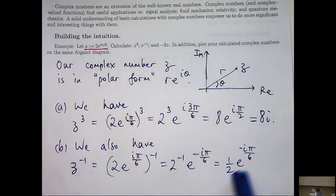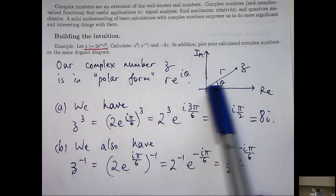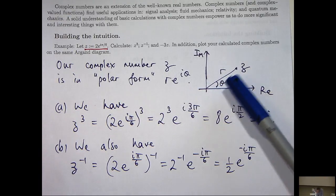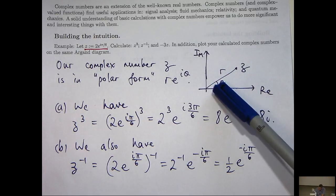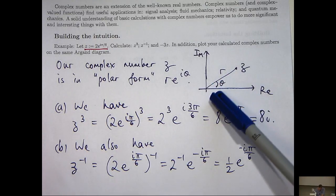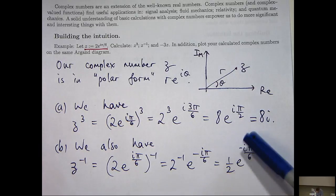So for this complex number, we go out from the origin 1/2 along the real axis, positive real axis, and then go in a clockwise fashion, π/6 because of that negative sign.